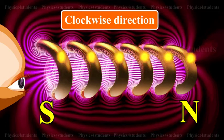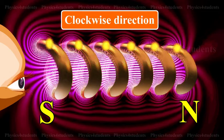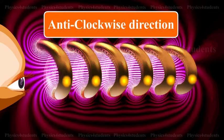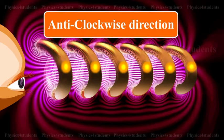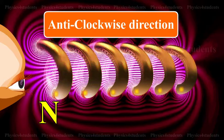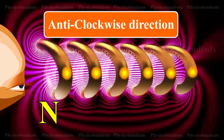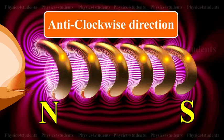When looked from one end, if the current through the solenoid is along the anticlockwise direction, the nearer end corresponds to north pole and the other end is south pole. This is the end's rule.